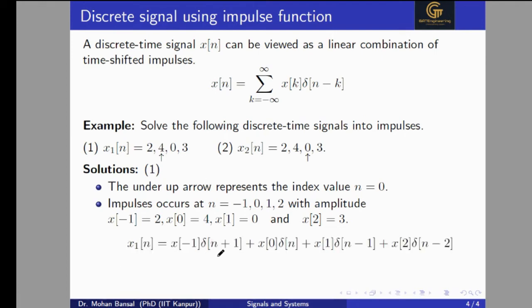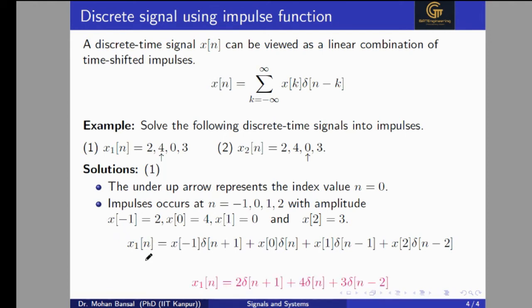We can write this signal as x(-1)·δ(n+1) + x(0)·δ(n) + x(1)·δ(n-1) + x(2)·δ(n-2), because the signal starts at n equal to minus one and ends at n equal to two. Substituting the values of x(-1), x(0), x(1), and x(2), we get 2δ(n+1) + 4δ(n) + 0 + 3δ(n-2). Since x(1) is zero, that term does not appear, giving the solution: 2δ(n+1) + 4δ(n) + 3δ(n-2).